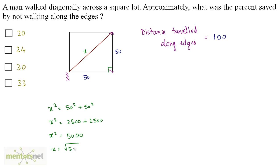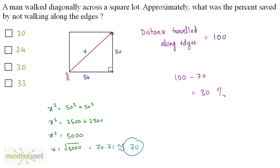So x = √5000 ≈ 70.71, which we approximate as 70. We can call it a percentage because we took the base value as 100. The percentage saved is 100 − 70 = 30%. If he had traveled along the edges he would have traveled 100 units, but diagonally he traveled only 70 units, saving 30 units — so he saved 30 percent. Option C is the correct answer.